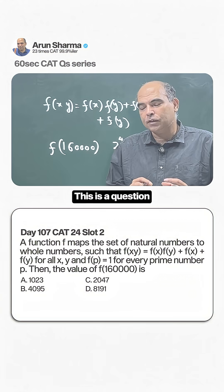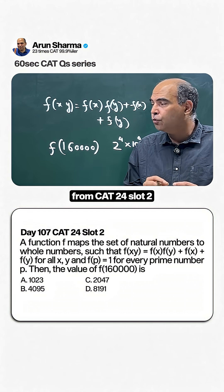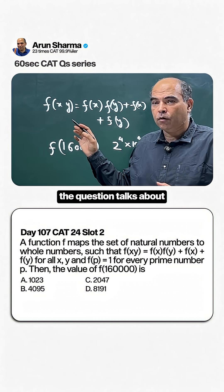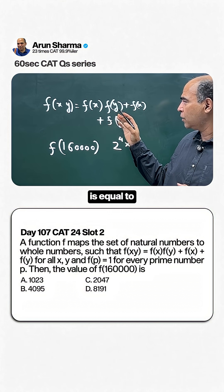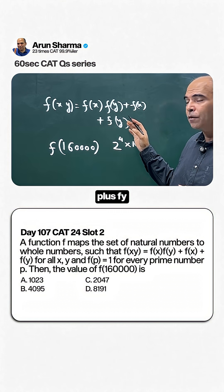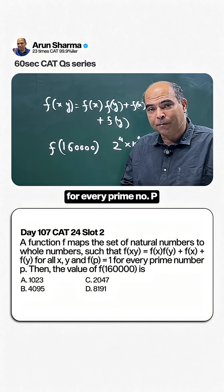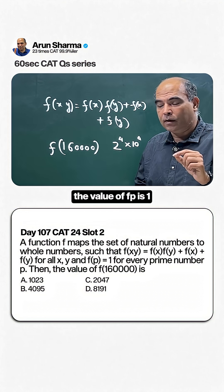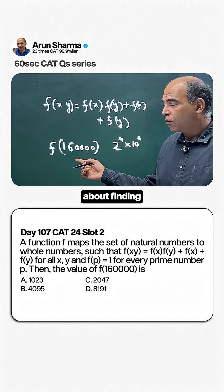Let's solve a CAT question in 60 seconds. This is from CAT 24 Slot 2 on functions. The question states f(x,y) = f(x)f(y) + f(x) + f(y), and for every prime number p, f(p) = 1. We need to find f(160000).